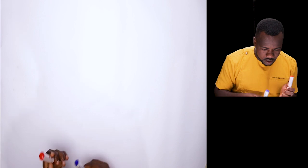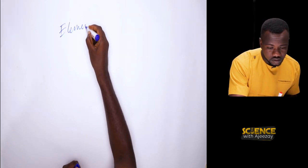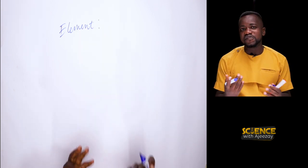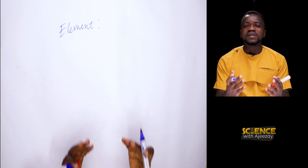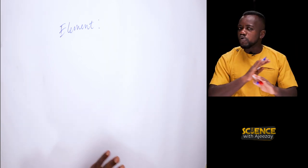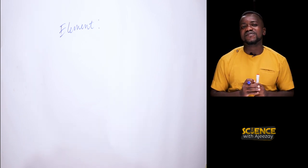Let us start with elements. This is not the first time you are hearing this — you've heard elements — but I'm basically here to lay the foundation and make you understand every bit of this lesson. An element is a pure substance that is made up of the same kind of atoms and cannot be broken down into any simple form by any known chemical process.